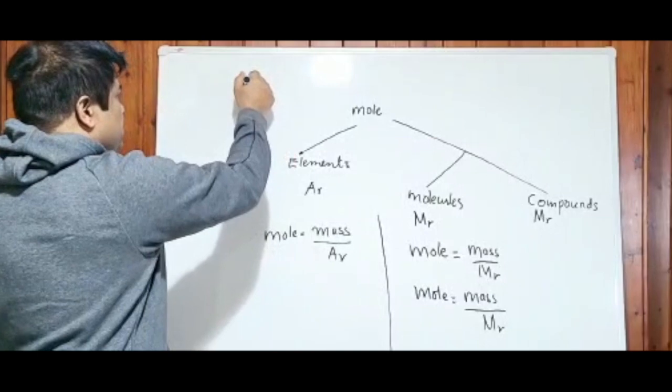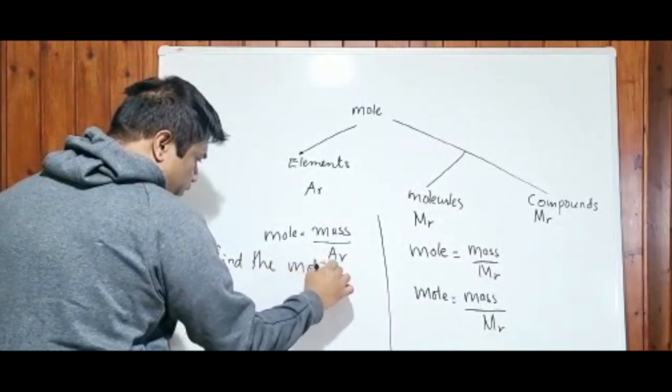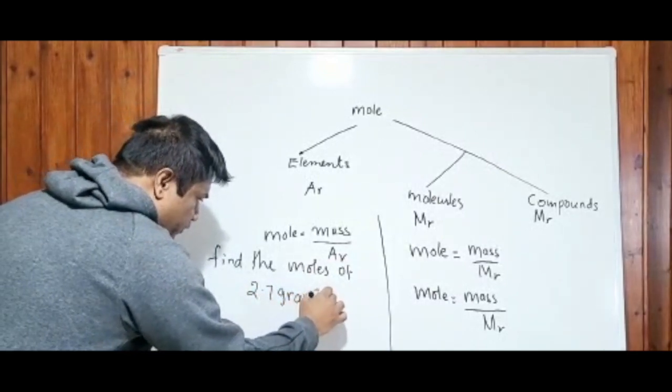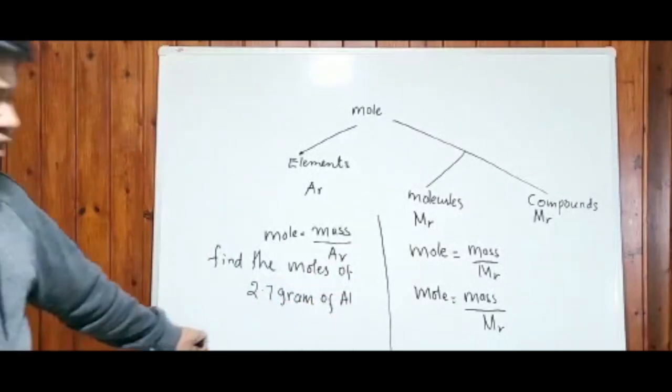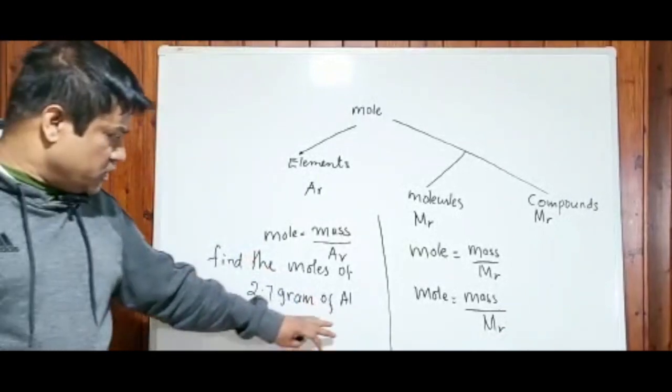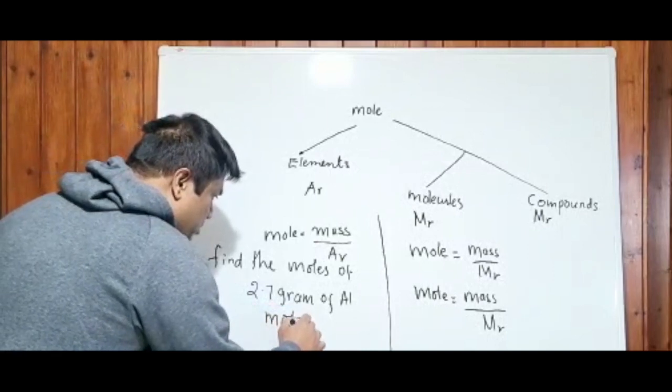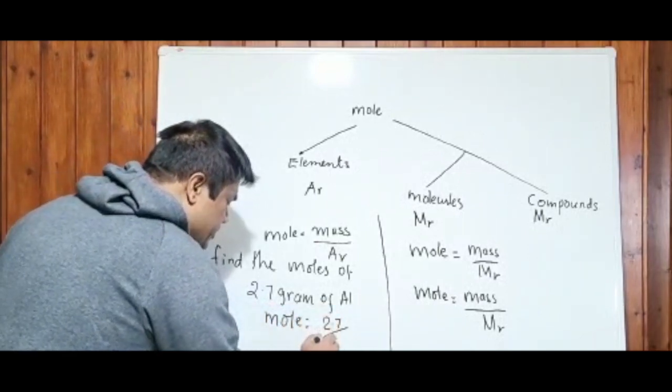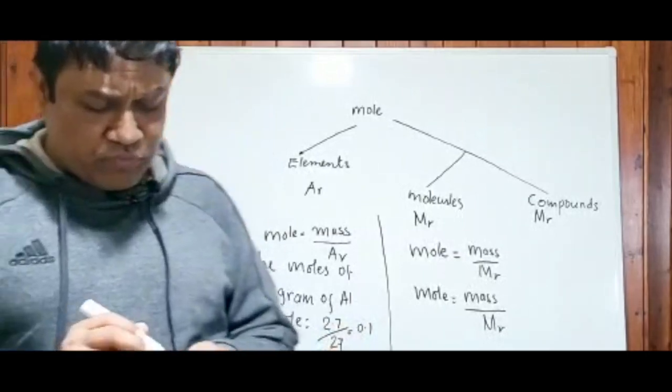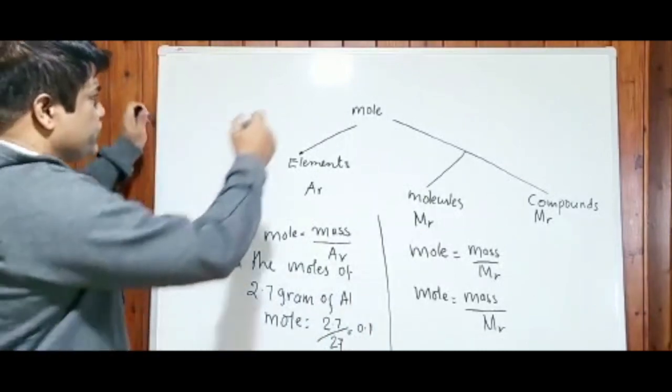For example, find the moles of 2.7 grams of Al, aluminium. You can see what is the AR of the element aluminium - check in the periodic table. Yeah, AR is 27 for aluminium. Mole equals to mass of the aluminium, which is 2.7, divided by its AR, which is 27. So my mole is 0.1. Guys, there's no unit for mole. Mole is just like a quantity. Some teachers use this triangle formula to work out the mole.